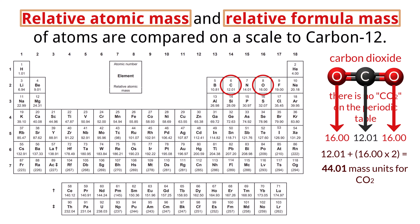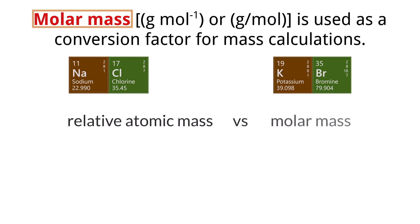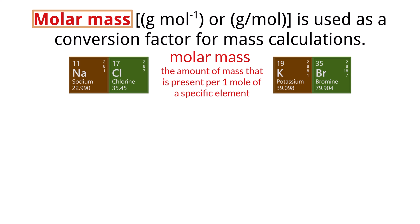Determining the mass of a molecule is routine in chemistry, so the moment you need a mass for a calculation, you should automatically refer to your periodic table. The values on the periodic table for relative atomic masses and molar mass values are negligibly different, so we can use them interchangeably. Molar mass is the amount of mass present per one mole of a specific element, expressed in units of grams per mole. We can use molar mass values from the periodic table as conversion factors to convert between mass and moles of a substance.